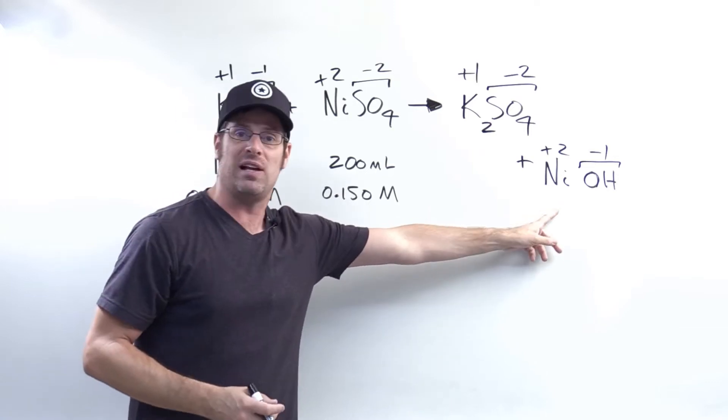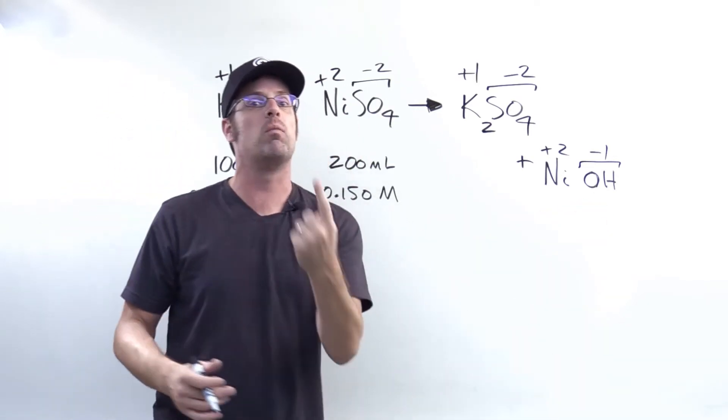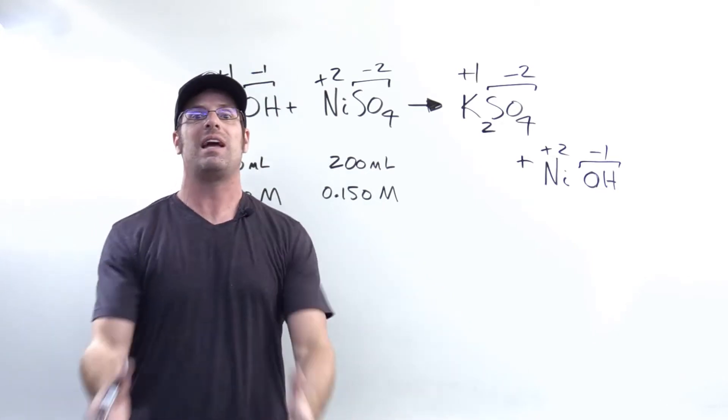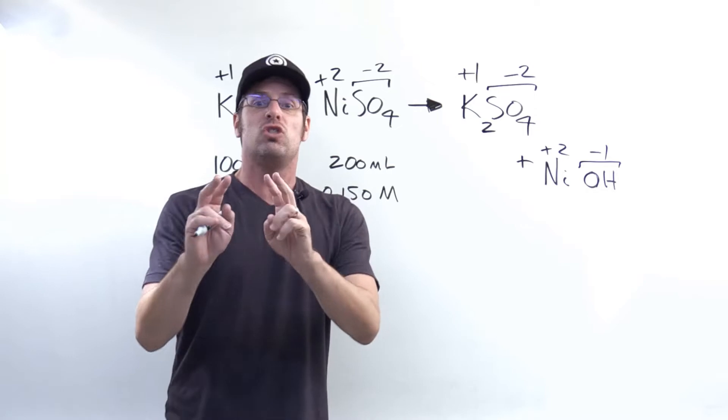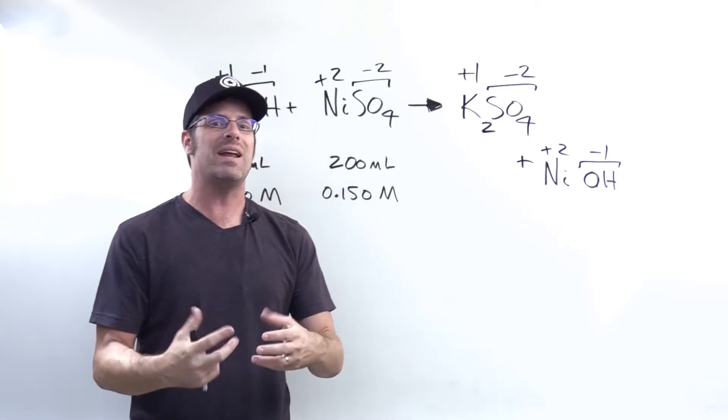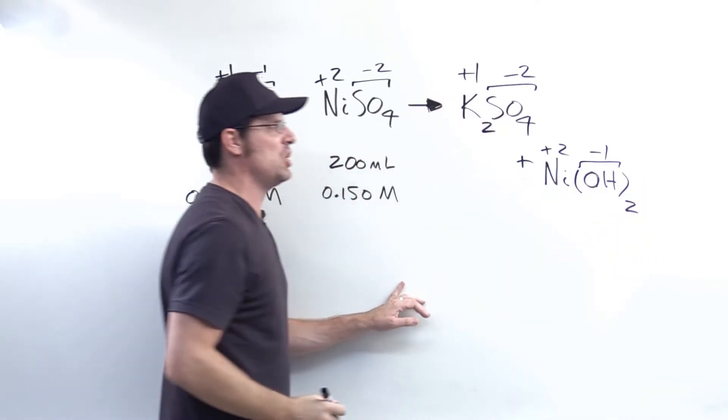Similarly for the nickel, with its plus two is not going to get canceled out charge-wise by the minus one from one hydroxide. So what do I do? I need two hydroxides. Now because hydroxide as an entity has two atoms in its formula, how do I indicate that there's two of them? I have to encase it in parentheses in the formula and put a subscript of two.